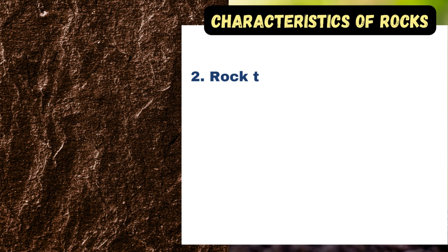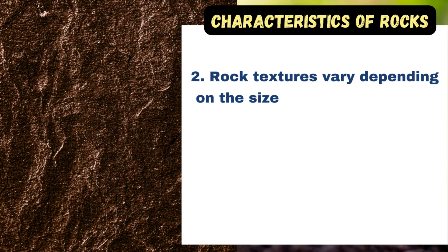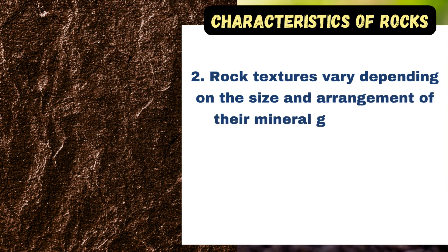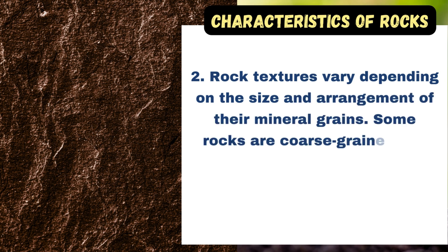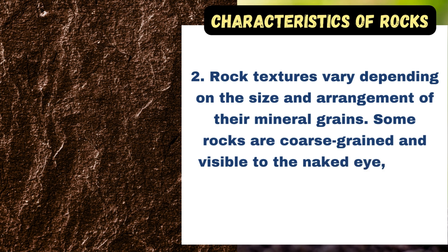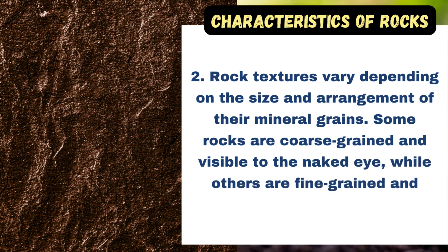Rock texture varies depending on the size and arrangement of their mineral grains. Some rocks are coarse-grained and visible to the naked eye, while others are fine-grained and require a microscope to see.